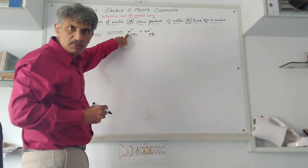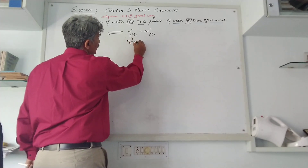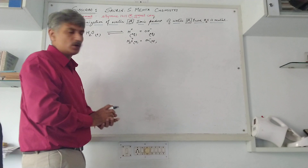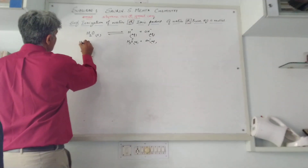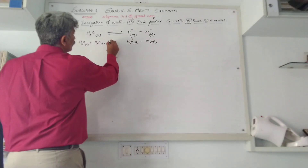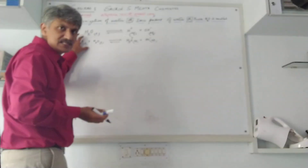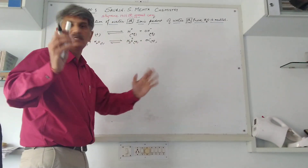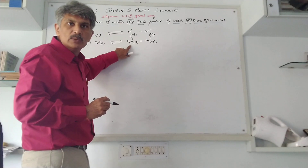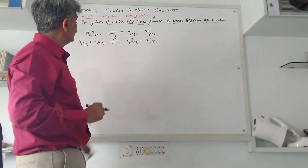H⁺ can also be written as H₃O⁺ — the meaning remains the same. If you consider numerous molecules of water, only one minimal part ionizes and the rest remains unionized. The H⁺ ion combines with the lone pairs on the oxygen of another water molecule and converts to H₃O⁺. So whether you write H⁺ or H₃O⁺, the meaning is the same.